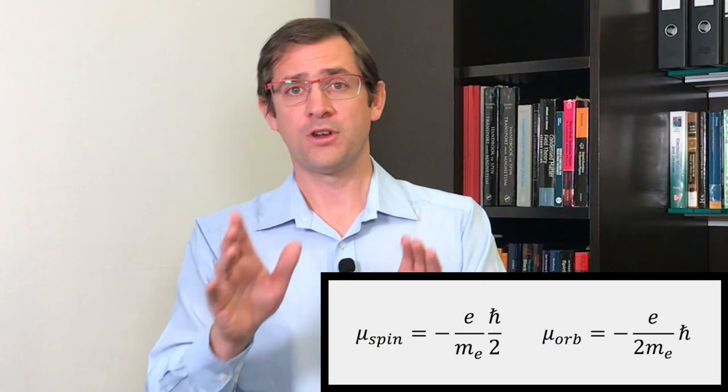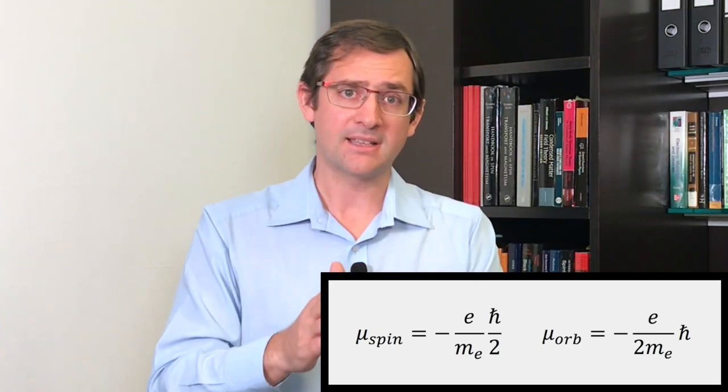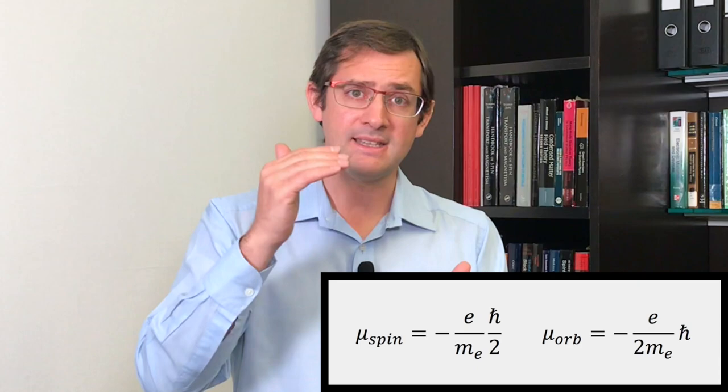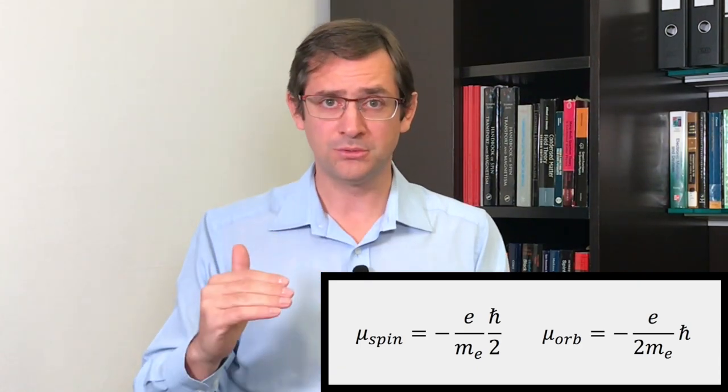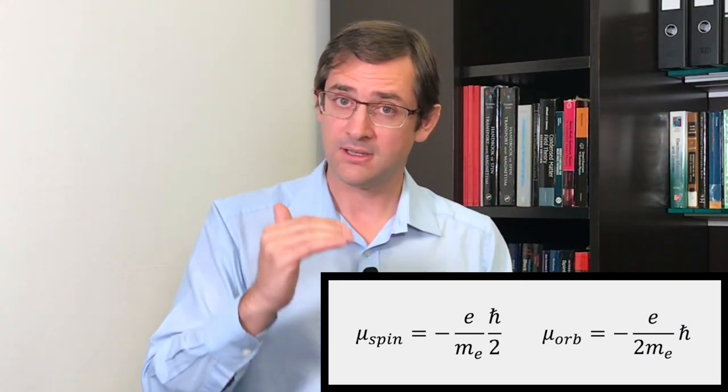An interesting aspect of this new quantity is the ratio between the magnetic moment and the spin angular momentum. To interpret the hydrogen spectrum, this ratio had to be twice as large as the ratio between the magnetic moment and the orbital angular momentum. So while the magnetic moment associated with the spin is e over m_e times h-bar over 2, the magnetic moment associated with the orbital moment is e over 2m_e times h-bar.